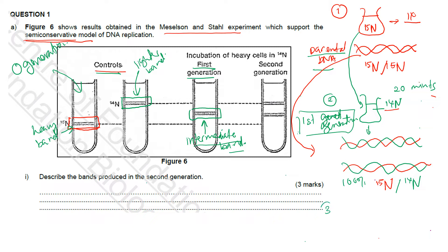In the second generation, after waiting another 20 minutes, the DNA is again extracted and centrifuged following the same procedure. To get the DNA for the second generation, the template from the first generation is used.